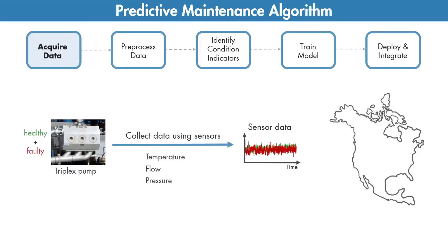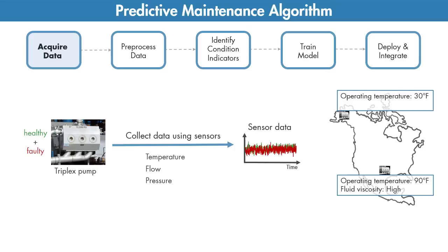For example, you may have the same pumps running in different places, one in Alaska and the other one in Texas. One may be pumping highly viscous fluid whereas the other one operates with a low viscosity fluid. Although you have the same type of pumps, one may fail sooner than the other due to these different operating conditions. Capturing all this data will help you develop a robust algorithm that can better detect faults.